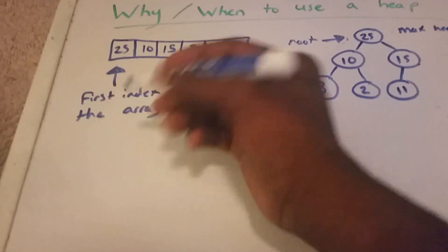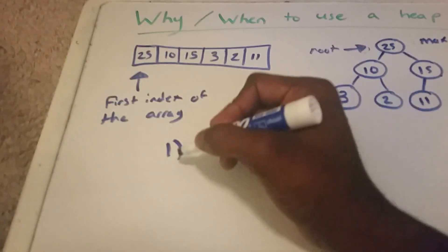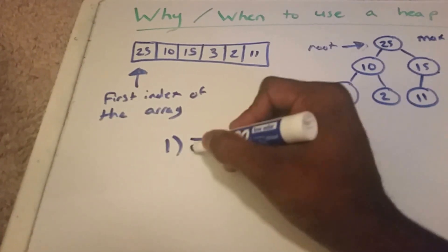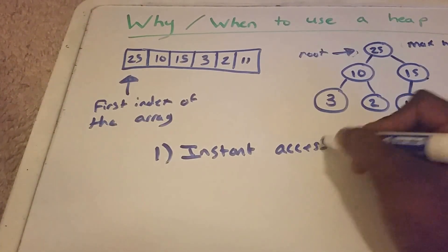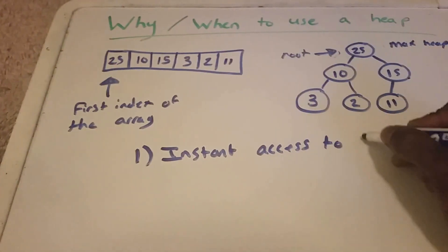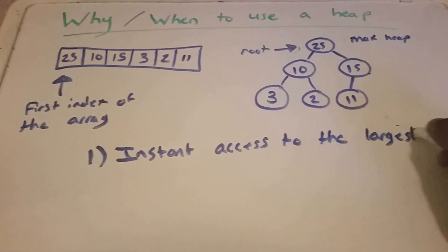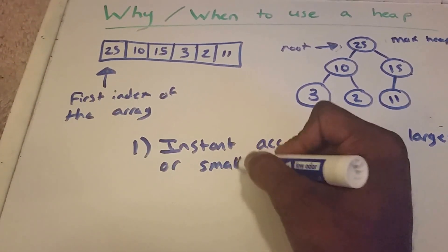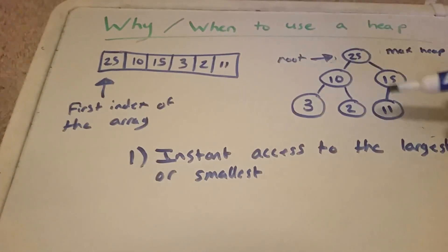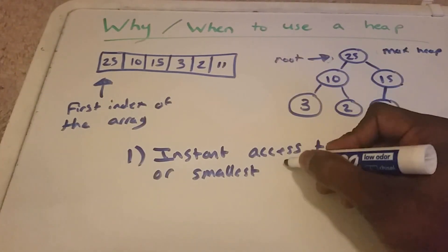So why do we want to use, or when do we want to use a binary heap? Well, first, it's for instant access to the largest or smallest. In this case it's the largest, because we're using a max heap, but a min heap it will be the smallest value.